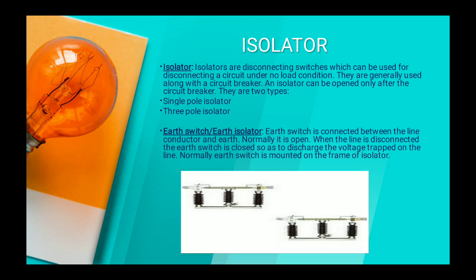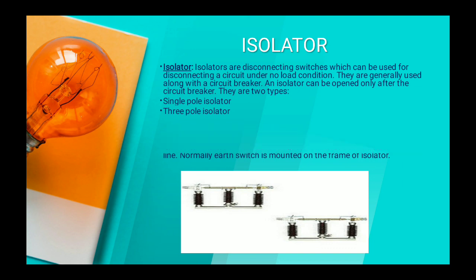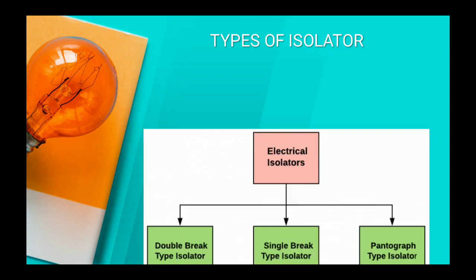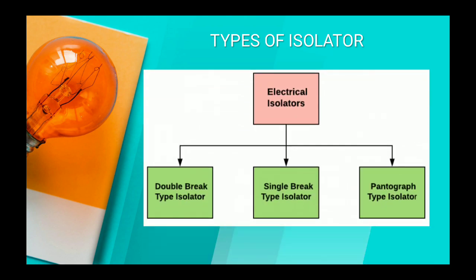These are the images of isolator — these are the three pole isolator. These are the different types of isolator. Types of isolator can be classified into three categories: double brake type isolator, single brake type isolator, and pantograph type isolator.